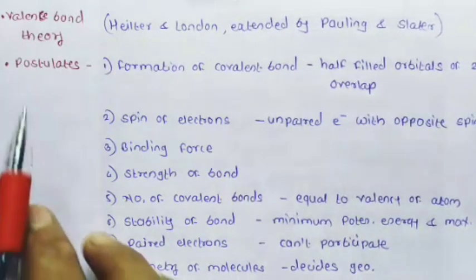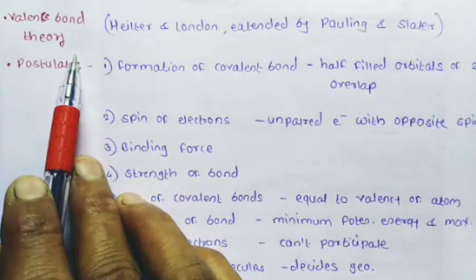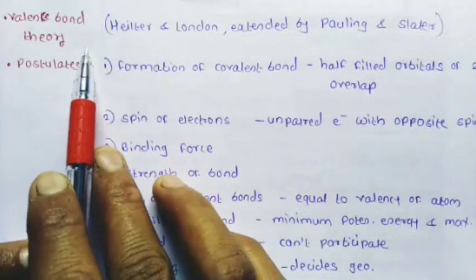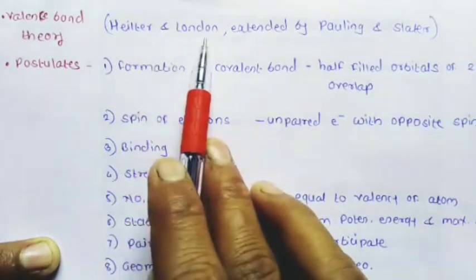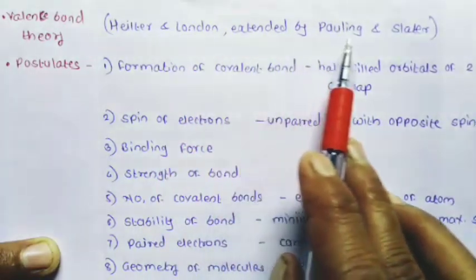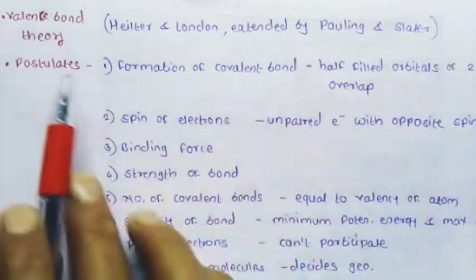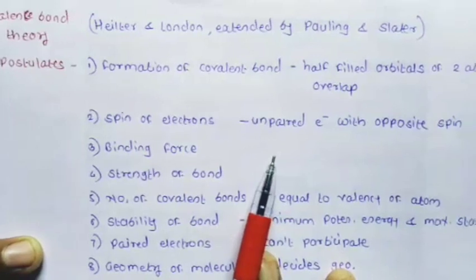Next we will discuss valence bond theory. This valence bond theory was developed by Heitler and London, and was expanded by Pauling and Slater. The postulates of valence bond theory are as follows.